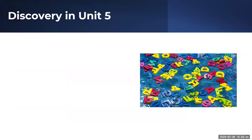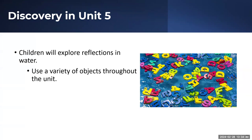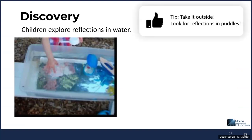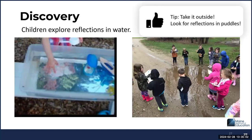In the Discovery Center for Unit 5, children will explore reflections in water using a variety of objects throughout the different weeks of the unit. Connections will be made to Play With Me, Raccoon on His Own, and Puddle Pail. Children will explore and compare and contrast reflections of different objects and materials. A tip: extend this activity by taking it outside and looking for reflections in puddles.